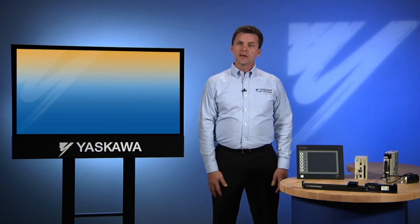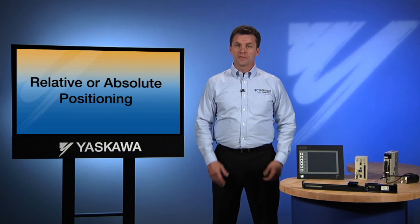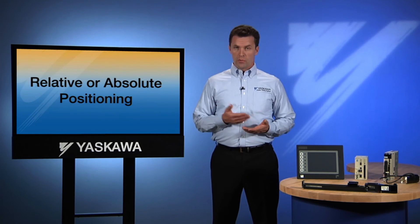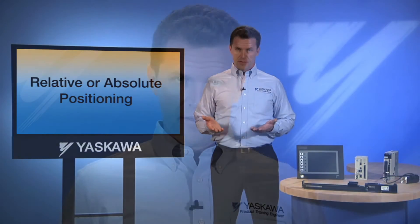Modern industrial motion controllers allow the programmer the option to define the move either relatively or absolutely, whichever makes the most sense for that particular part of the control program. For this reason, we really can't tell which method was used by simply looking at the machine in motion.